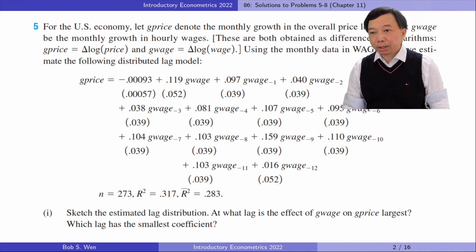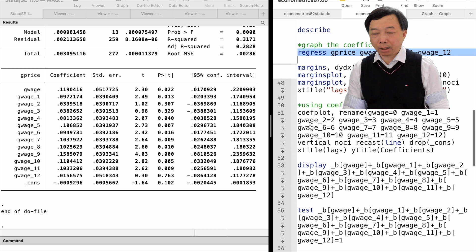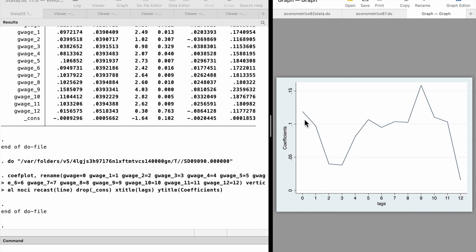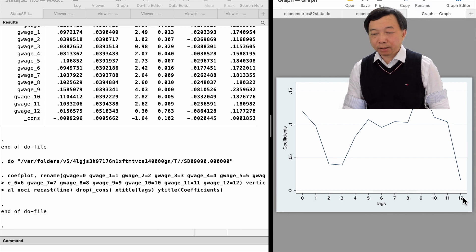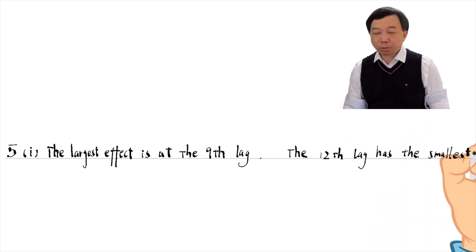In part 1, sketch the estimated lag distribution. At what lag is the effect of g_wage on g_price largest? Which lag has the smallest coefficient? We can plot the coefficients in a graph using the coefplot command. From the distributed lag graph, or from the estimated equation, we can see that the largest effect is at the 9th lag. The 12th lag has the smallest coefficient.